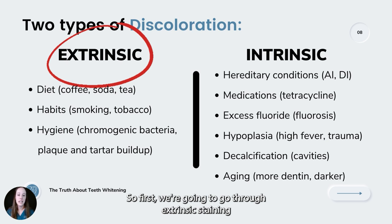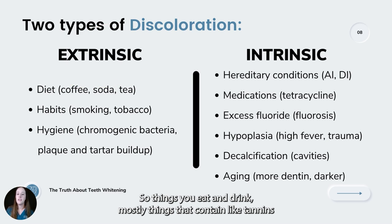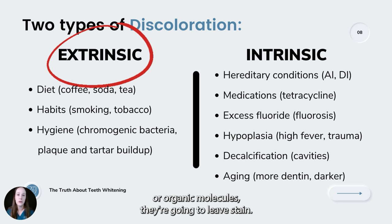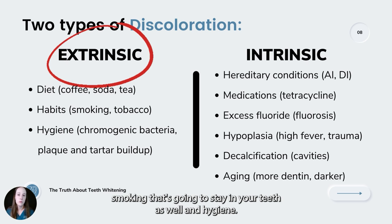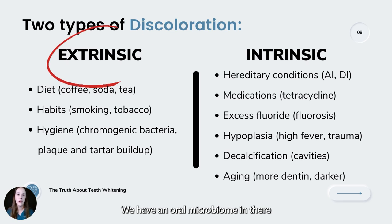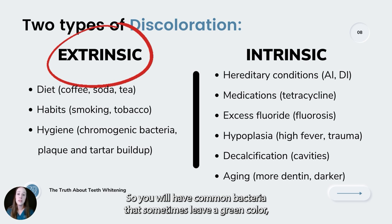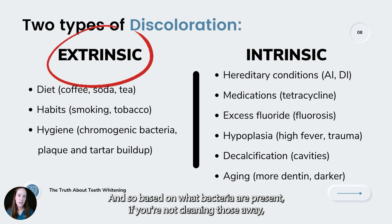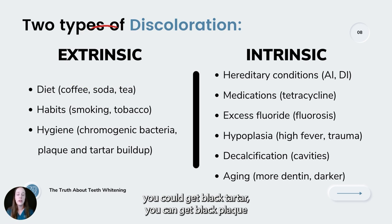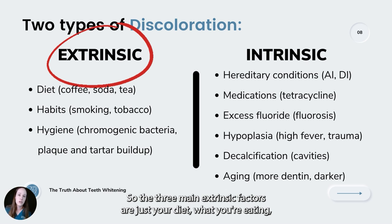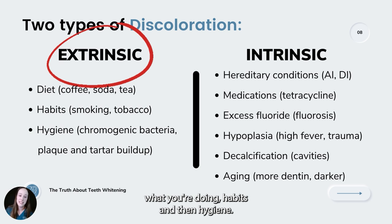Extrinsic staining comes from your diet — things containing tannins or organic molecules that leave stain, like coffee, dark soda, and tea. Habits like tobacco and smoking also stain teeth. And hygiene plays a role too: chromogenic bacteria in our oral microbiome can leave green, orange, or dark black discoloration depending on what they're eating. If you're not cleaning those away, you can get black tartar or black plaque. The three main extrinsic factors are diet, habits, and hygiene.